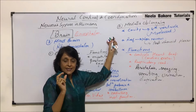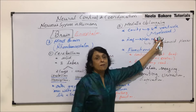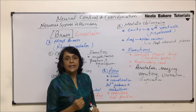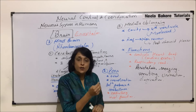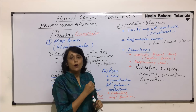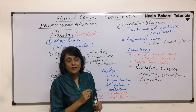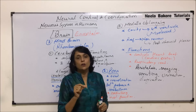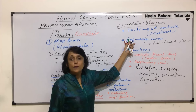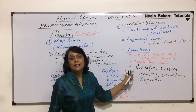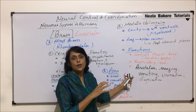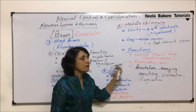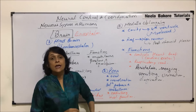Medulla has a cavity known as mylocele or the fourth ventricle. It is connected to the third ventricle by the aqueduct of Sylvius, and posteriorly to the central canal of the spinal cord. Its roof is non-nervous, and medulla houses the main involuntary centers of the body.